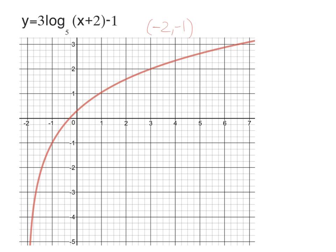And then I go and I plot that on my graph, so negative 2, negative 1. Then I draw my asymptote through that dot, so it's a vertical asymptote, so it looks like that.